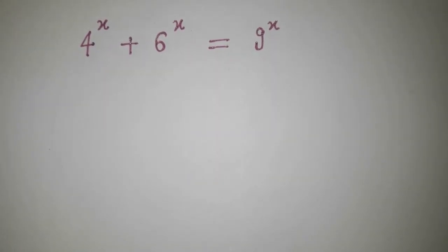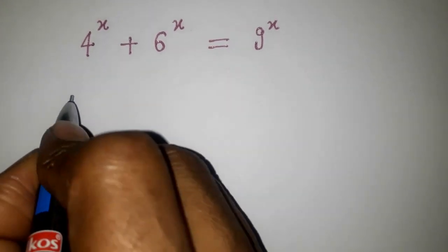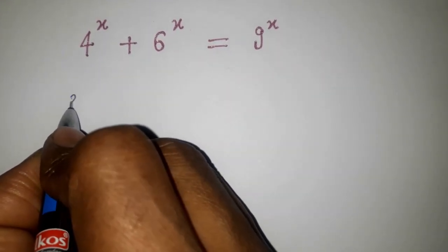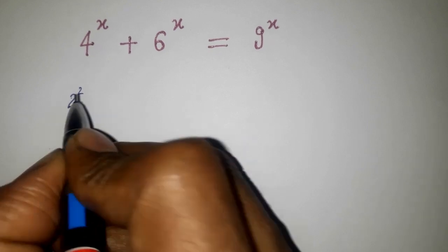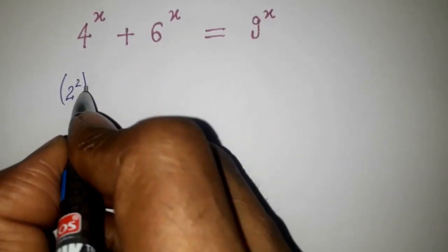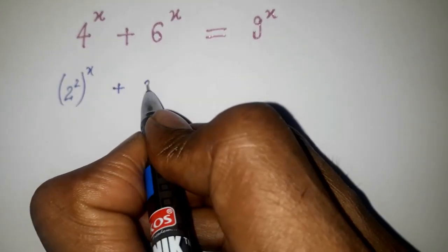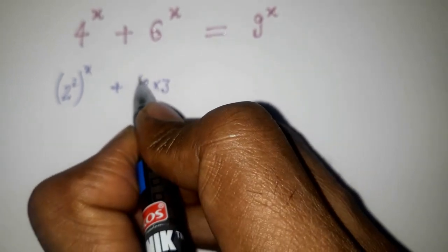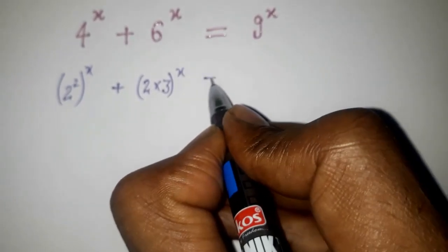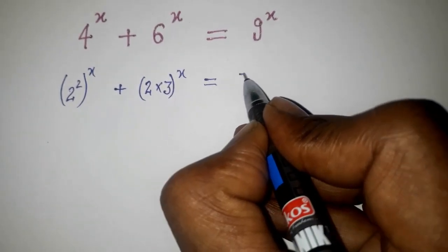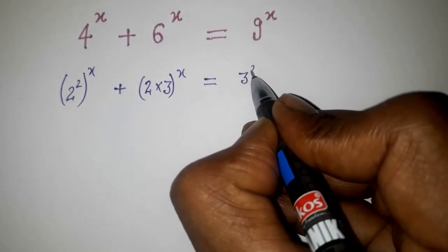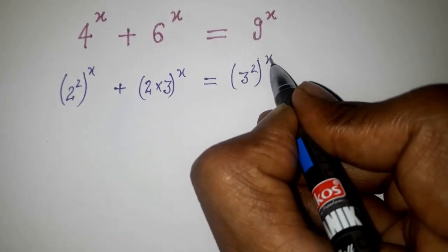So basically 2 and 3 are the numbers inside the bases. I am going to explore that. This 4 can be written as 2 to the power 2, and 6 can be written as 2 multiplied by 3 to the power x, and 9 is 3 squared, so 3 to the power 2x.